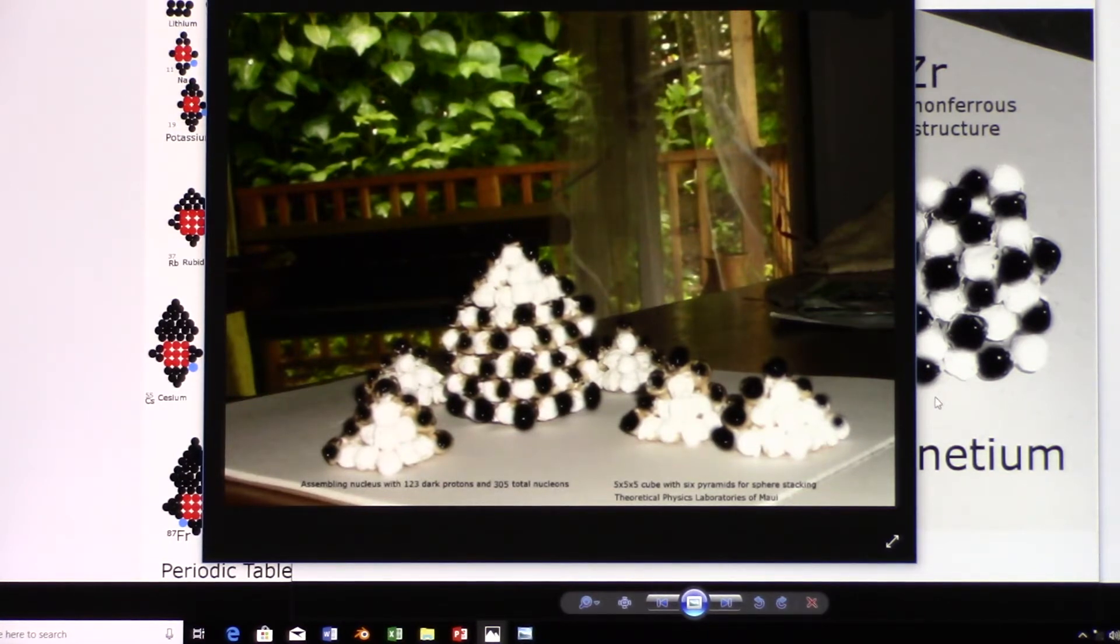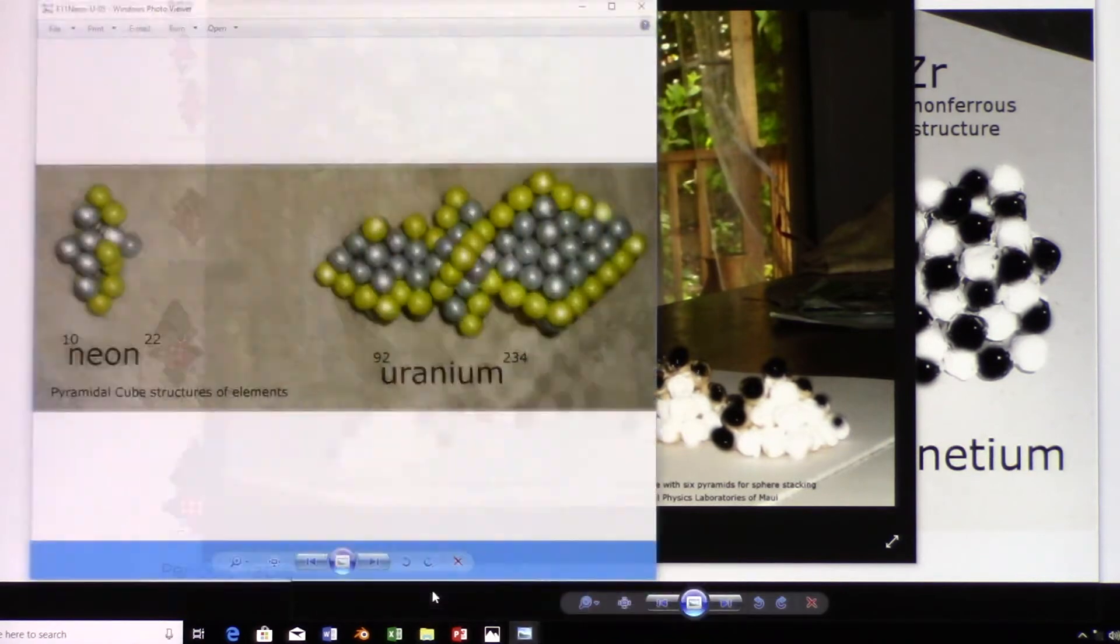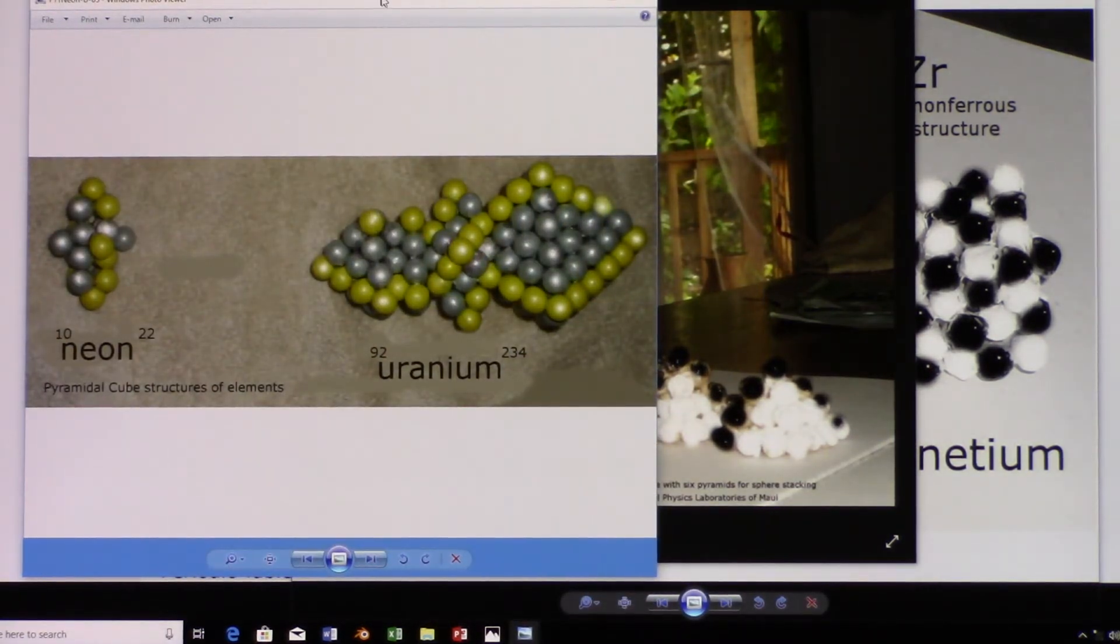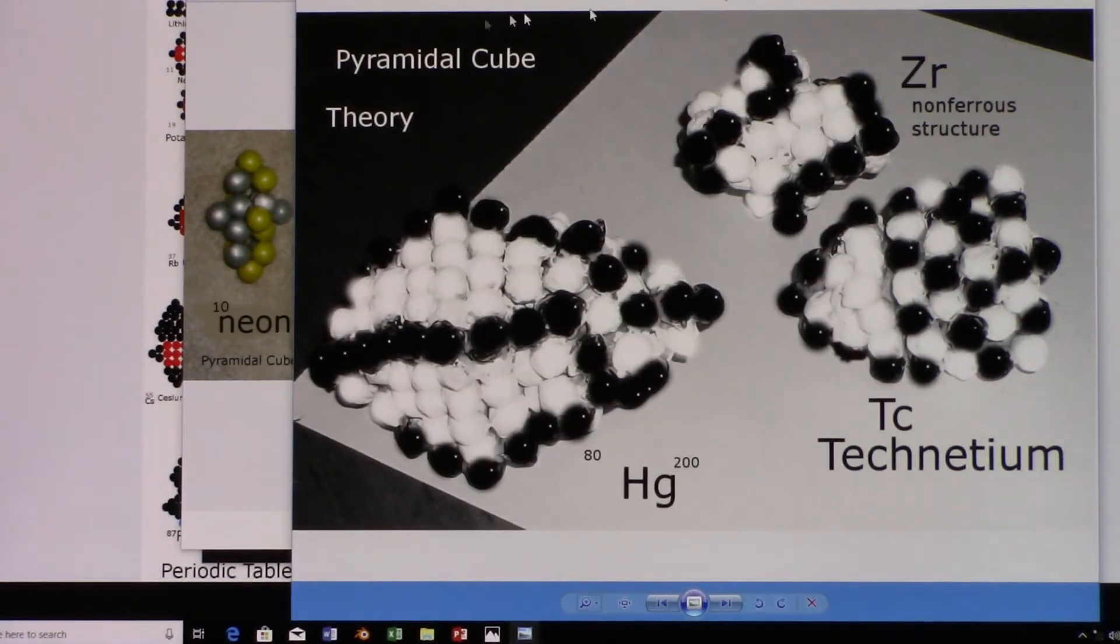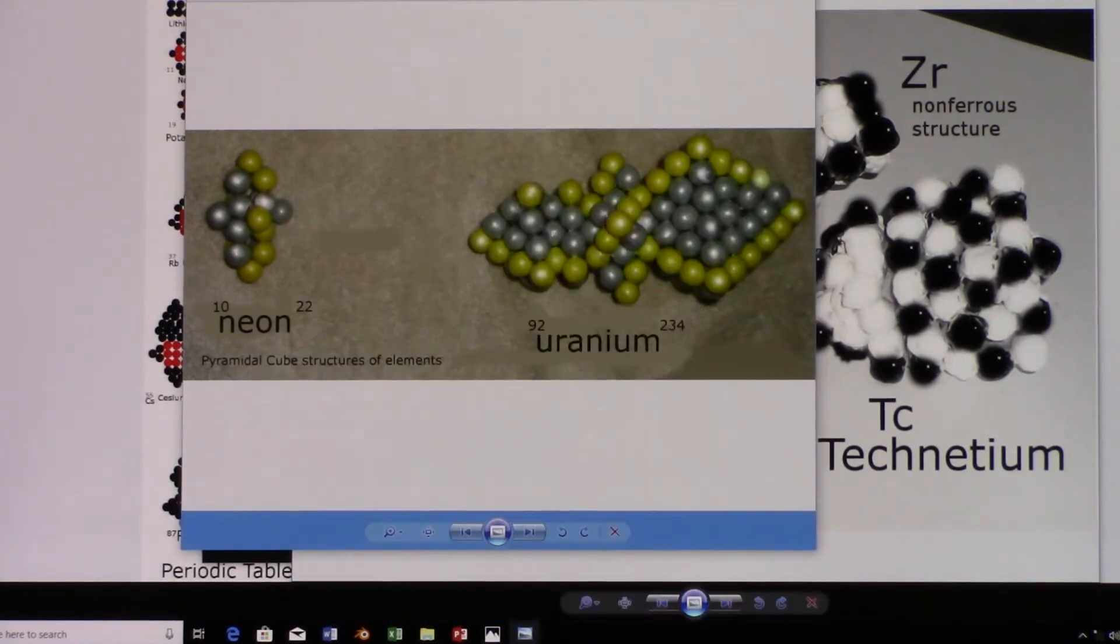We could also look at the way neon and uranium look compared to the cube four. Here's the technetium on the right there, and then the much smaller neon on the left.